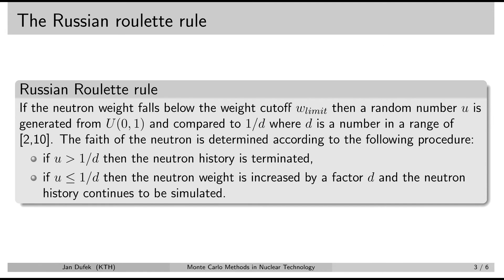This is a summary slide for the Russian roulette rule. Every time the neutron weight falls below the weight limit, a new random number u is generated from the interval [0, 1]. The number is compared to the value 1 over D, where you are free to choose the D value from the interval 2 to 10 — this is the recommended interval. If the random number is bigger than 1 over D, then the neutron history is terminated. If it's smaller or equal, then the neutron weight is increased by the factor D, and the neutron history continues.